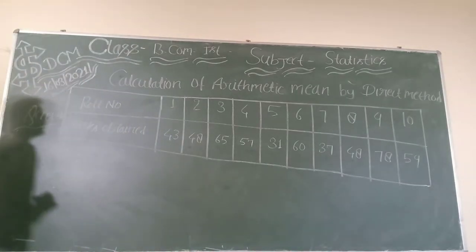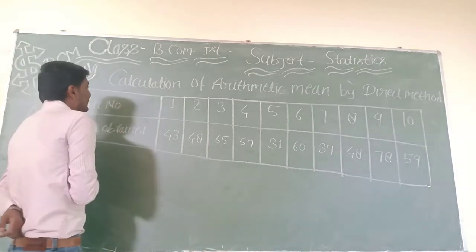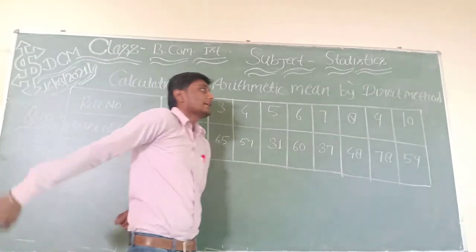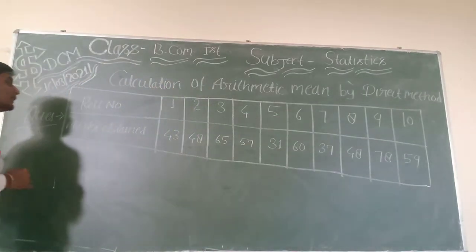First of all, for the direct method, this data has been given: 1, 2, 3, 4, 5, 6, 7, 8, 9, 10. You can change the data.